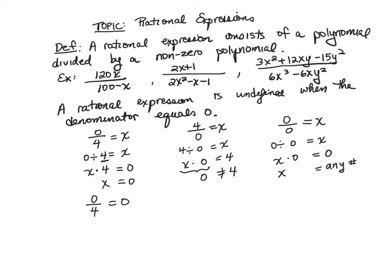So if x could be any number, zero over zero could be one, two, three — anything. Our system completely falls apart. So the only place zero is allowed in a fraction is in the numerator, never in the denominator. Never.